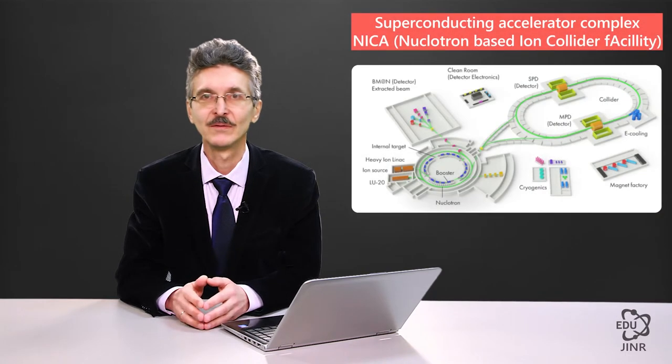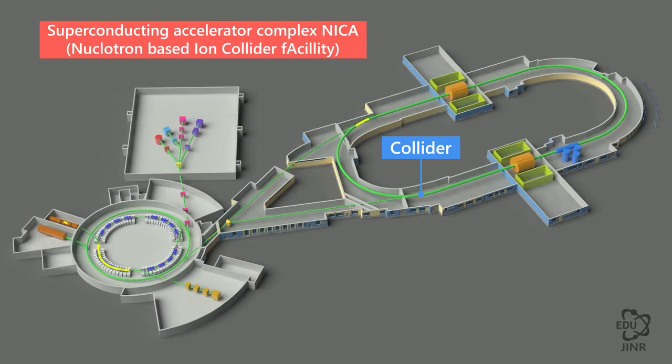NICA's principal experimental facility is the two collider rings, which operate in storage mode. They obtain beams from the nucleotron and form beams of the required intensity. Then, with the help of the high-frequency system, the beam is broken into short bunches, and a collision of these bunches takes place at two collision points.